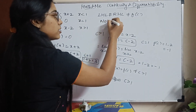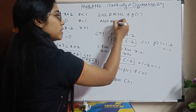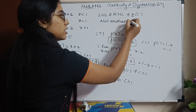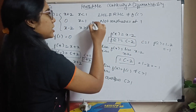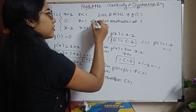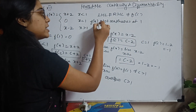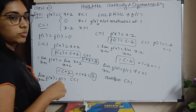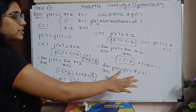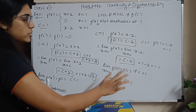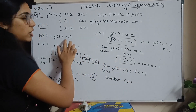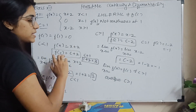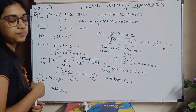So the function f of x is not continuous at 1. C greater than 1 it is continuous, c less than 1 it is continuous, but at 1 it is not continuous. You simply substitute the value of c which is 1.